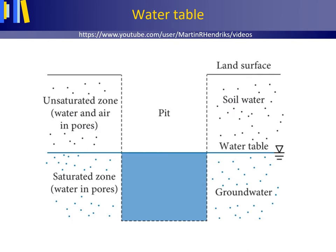This slide explains the positioning of the water table in easy terms. If you were able to dig a large pit, the level to which the water from the ground rises in that pit is called the water table. The water table is in between the unsaturated zone — soil water, with water and air in the soil pores — and the saturated zone, where water fills the pores, also known as groundwater.